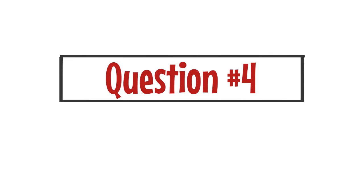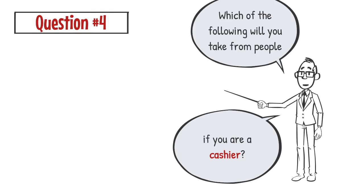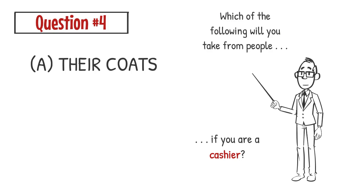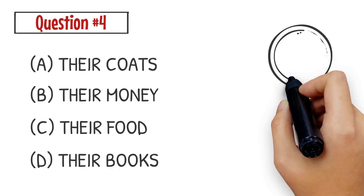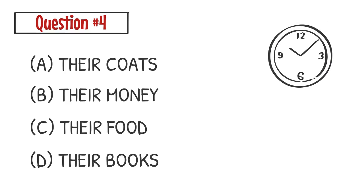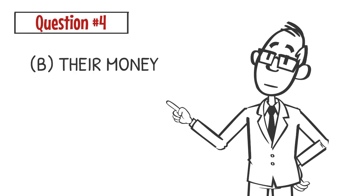Question number 4: Which of the following will you take from people if you are a cashier? A. Their coats B. Their money C. Their food D. Their books. The correct answer is B. If you are a cashier, you will take people's money.